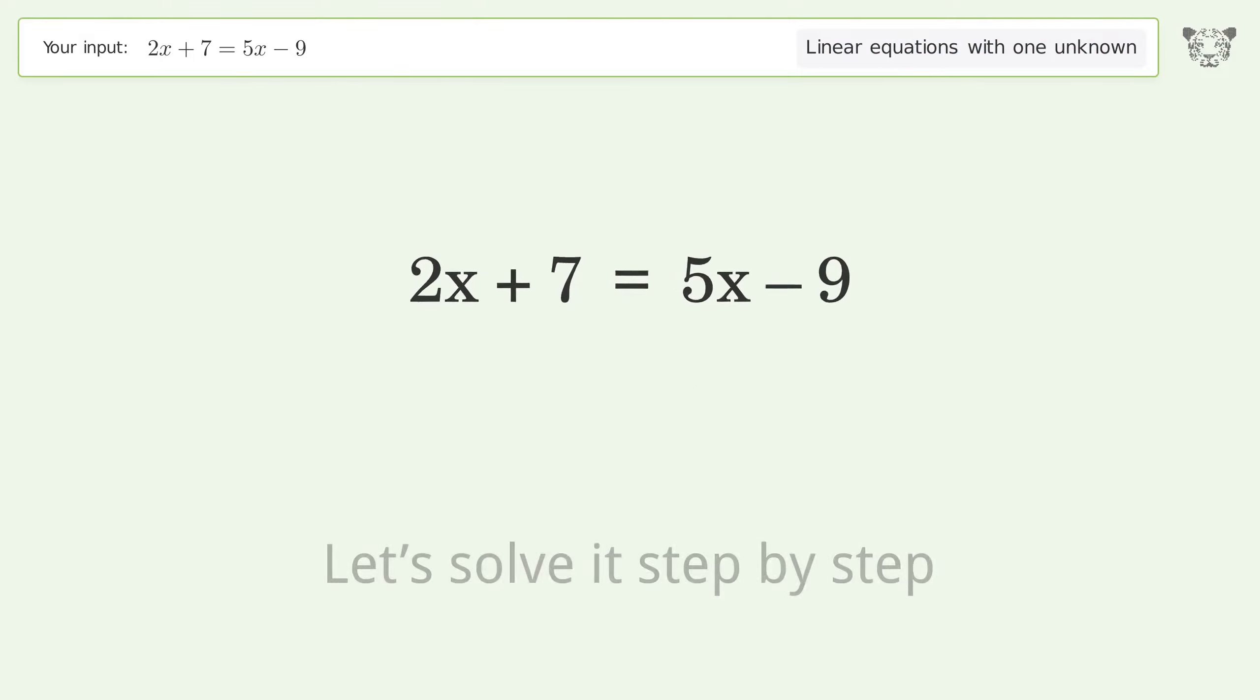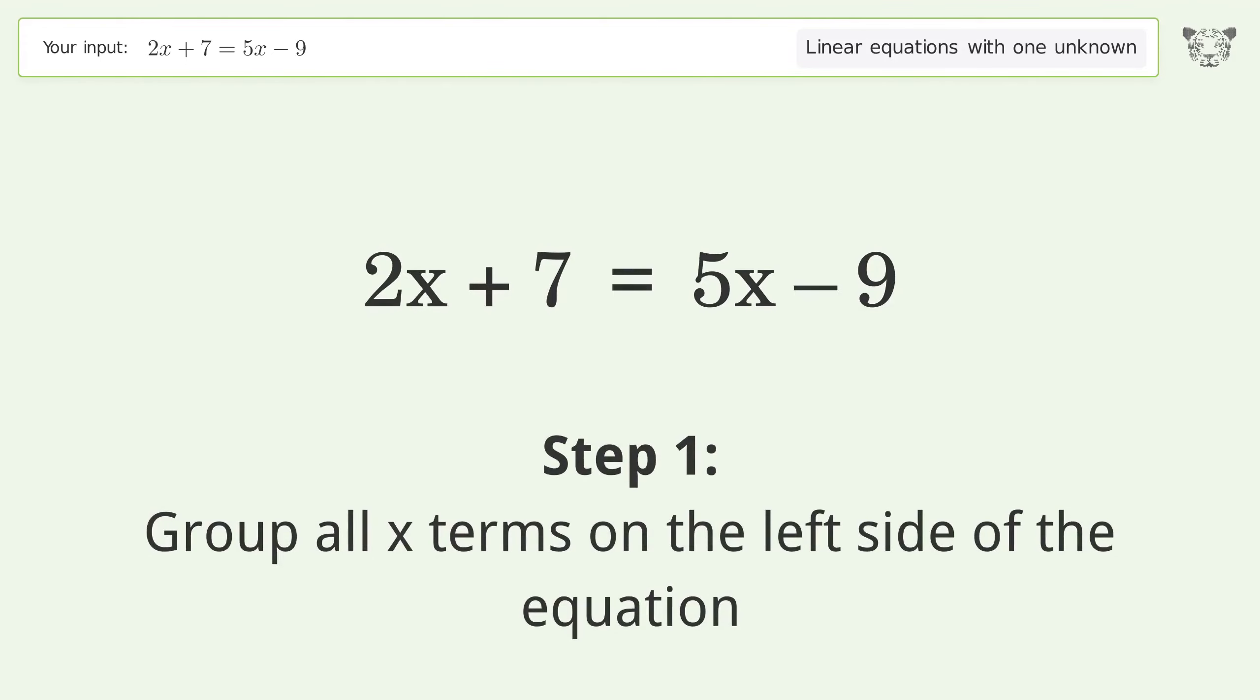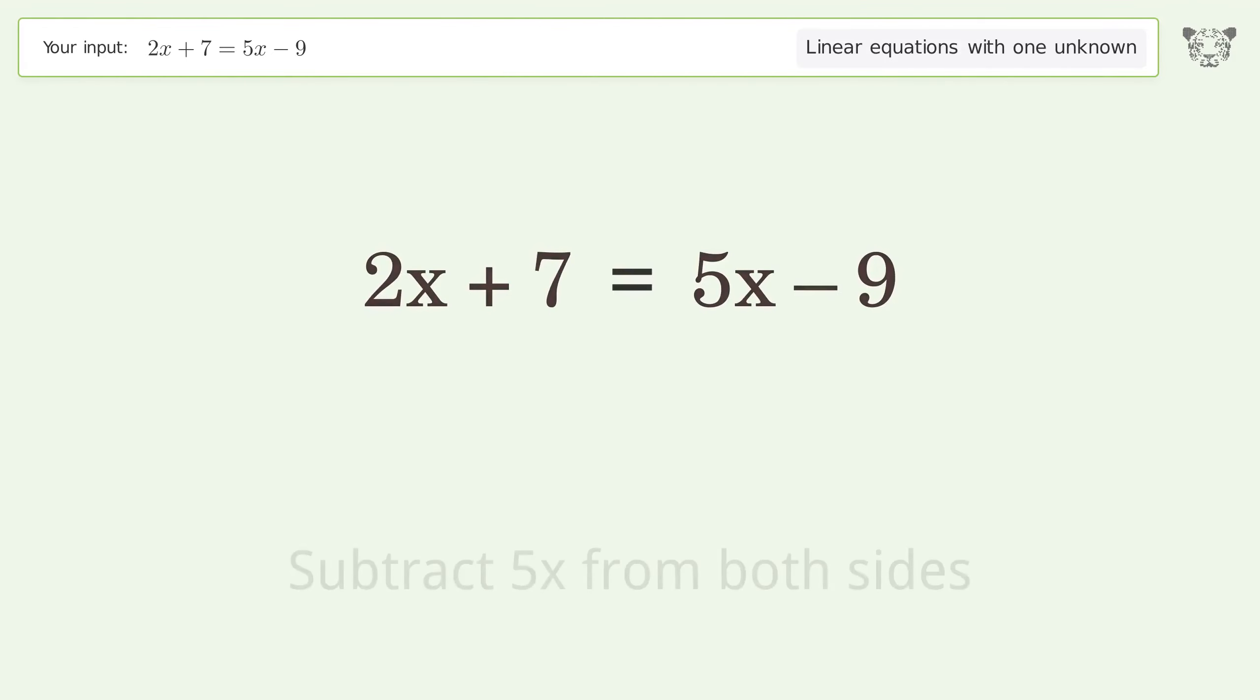Let's solve it step by step. Group all x terms on the left side of the equation. Subtract 5x from both sides. Group like terms.